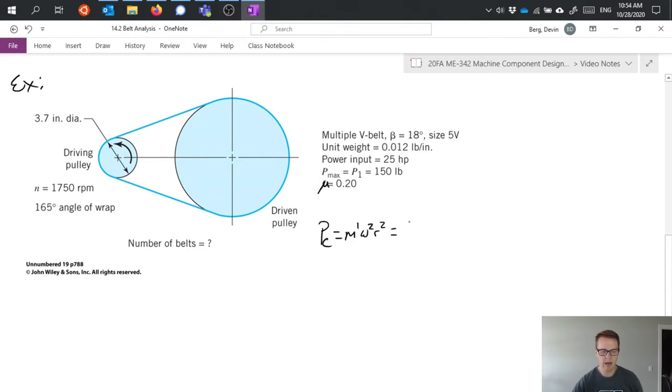We have 0.012 pounds per inch. Note that this is given in pounds so it's a weight rather than a mass and mass is what we need so we'll divide that by 386 inches per second squared which is the acceleration of gravity in inches per second squared.